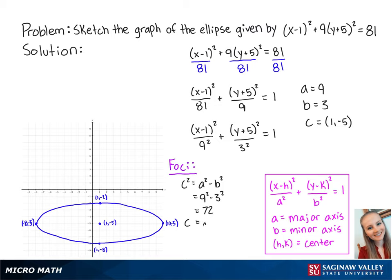So c is equal to the square root of 72, which is roughly about 8.49. So the two focus points will be (-7.49, -5) and (9.49, -5). Now we will plot the two focus points, and this completes the problem.